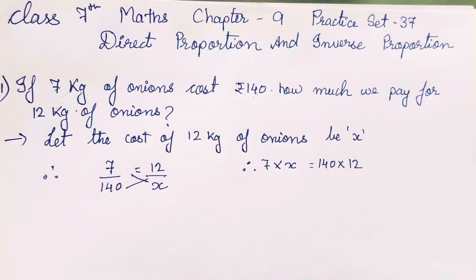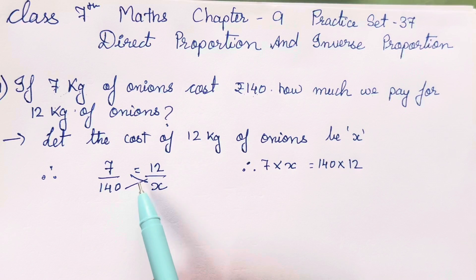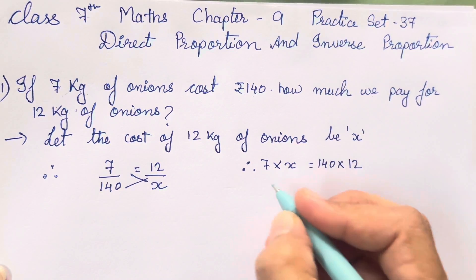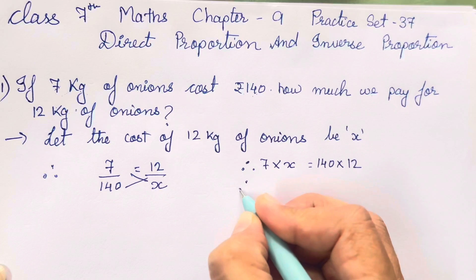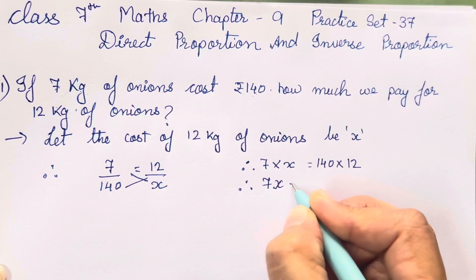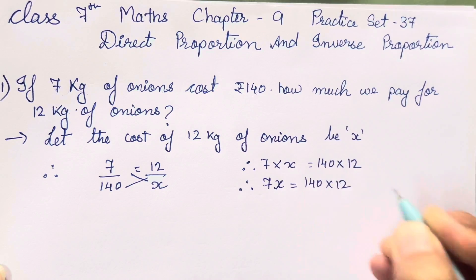Alright children, this is going to be very easy for you all to solve — cross multiplication. We have already done it in the previous videos also. If you are finding anything difficult or new, let me know in the comment section. This will give you 7x is equal to 140 into 12.